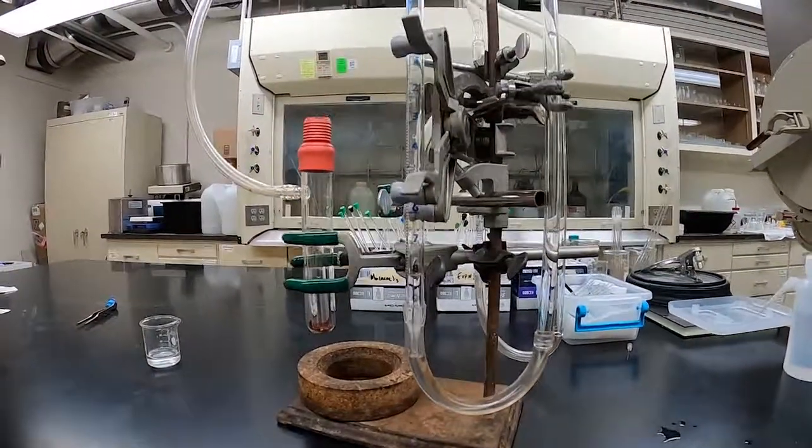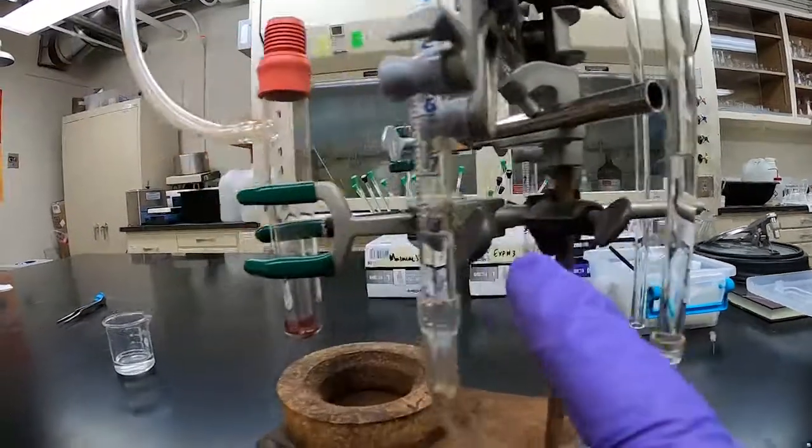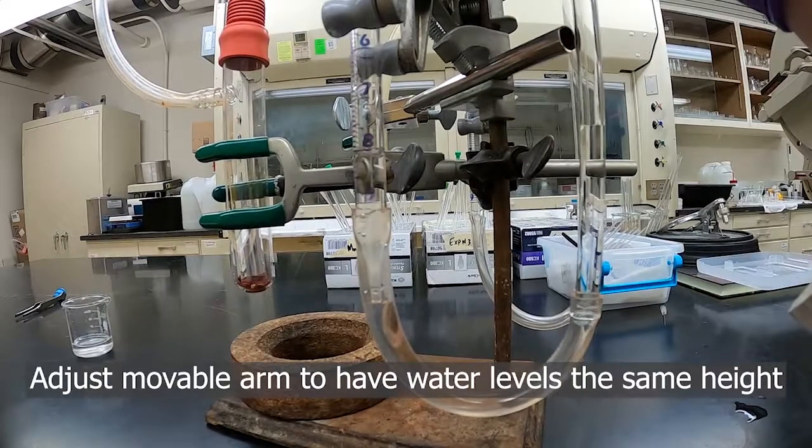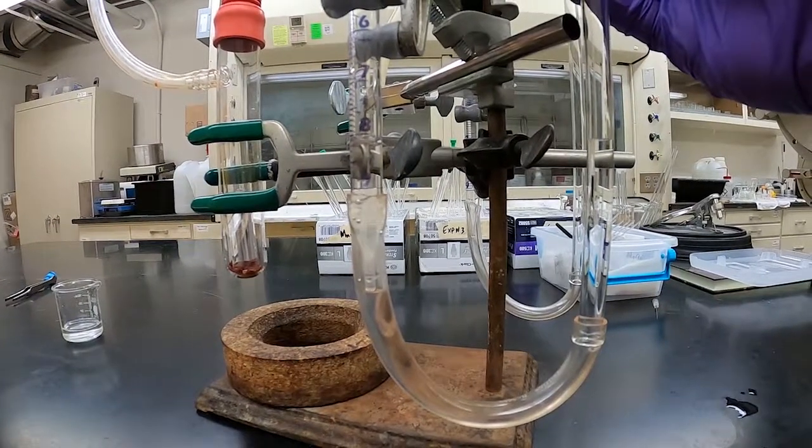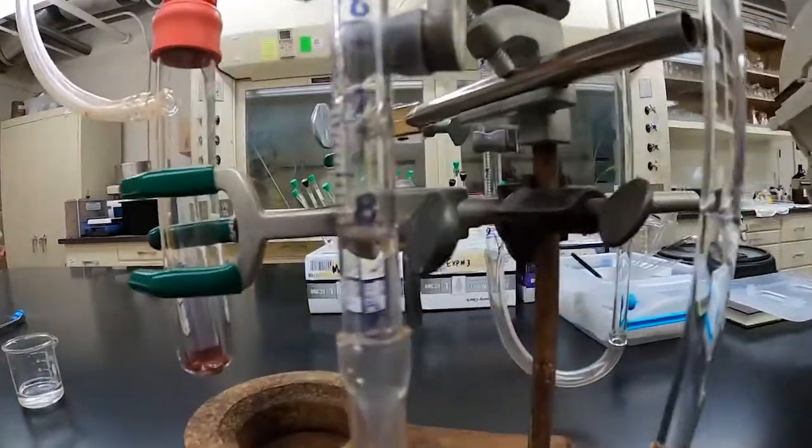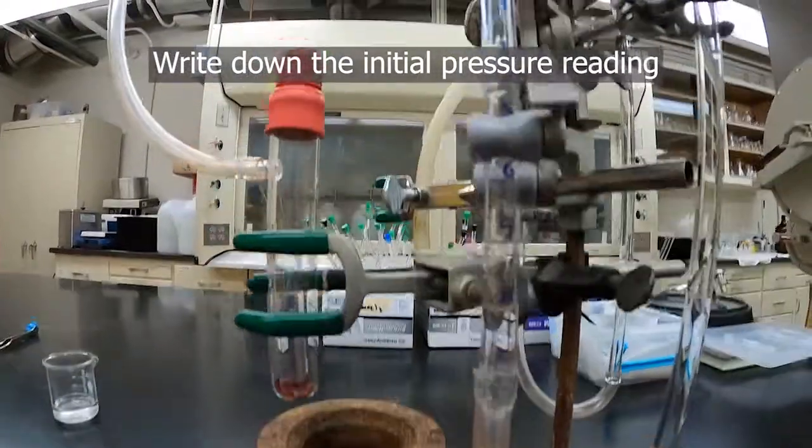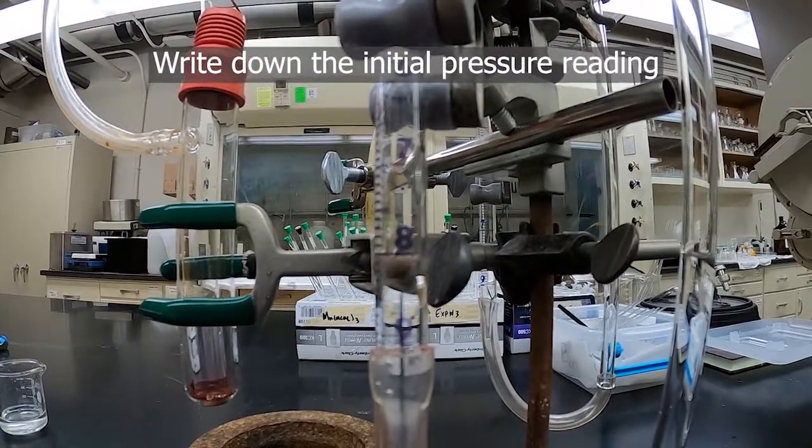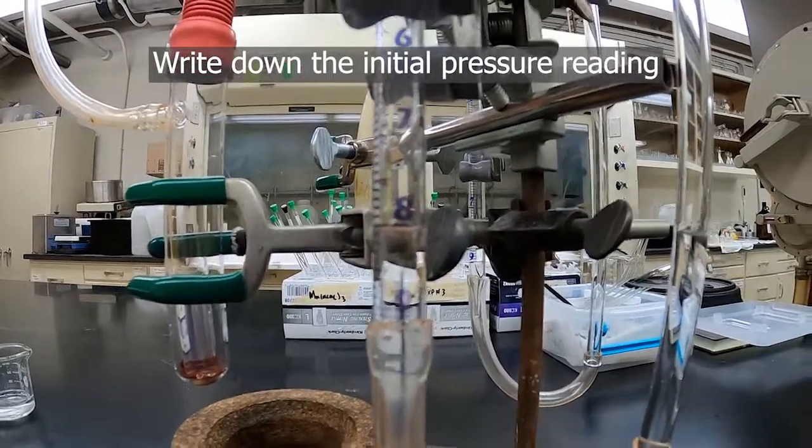So we clamp our sidearm tube in this clamp here on the side. The water level in the movable arm is about here, and on the graduated arm it's at 8 right there. So we want to adjust the height of the movable arm so that they're the same, which will tell us that the pressure inside our tube is atmospheric pressure. Right there looks pretty good to me. It's like 8.12 milliliters, 8.11 milliliters.